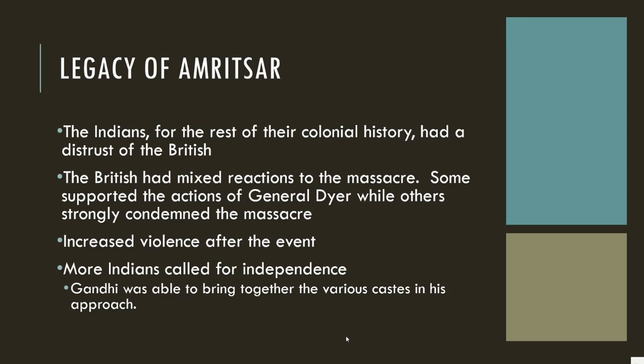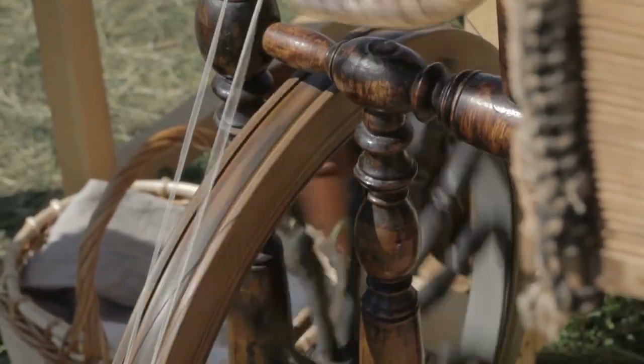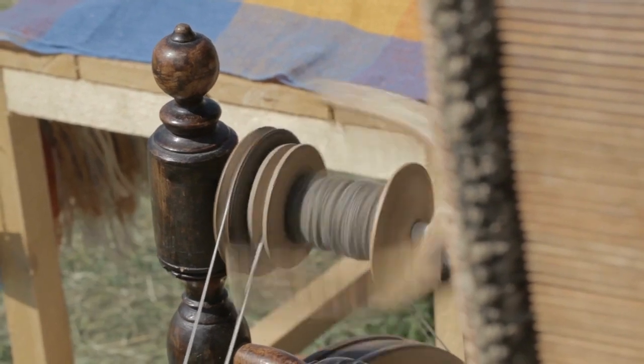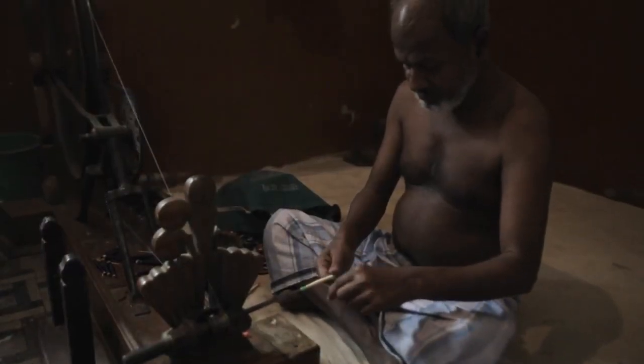Gandhi, rising through the scene, was able to do something that others — including the Indian National Congress — had not been able to do. He brought together the various castes in his approach, even calling for freedoms for the untouchables. He was able to make the masses follow and fight for their independence. One of the big events people associate with Gandhi is the Salt March. Gandhi was a strong supporter of people making items for themselves so they didn't have to rely on British products anymore. India had a rich history in textiles going all the way back to ancient times, and the spinning wheel to make thread and cloth became a symbol of the movement, with Gandhi himself making his own clothing.